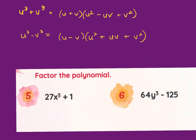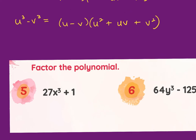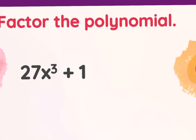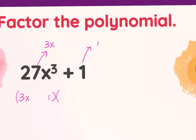Looking at problem 5, first identify that 27x³ and 1 are both perfect cubes. The cube root of 27x³ is 3x, and the cube root of 1 is 1. So it's (3x + 1)(9x² − 3x + 1), applying same, opposite, always positive.